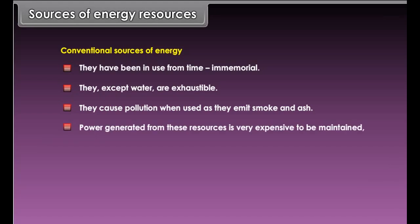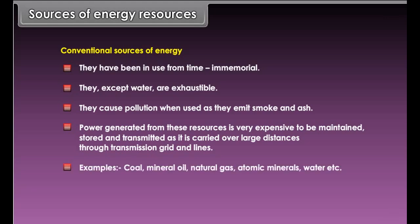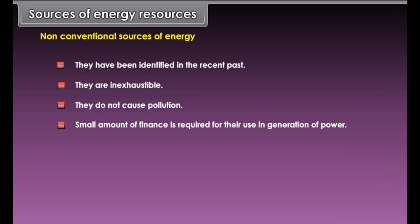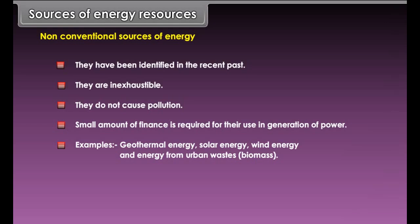Sources of energy resources. What is the difference between conventional and non-conventional sources of energy? Conventional sources of energy have been in use from time immemorial. They, except water, are exhaustible. They cause pollution when used as they emit smoke and ash. Power generated from these resources is very expensive to be maintained, stored and transmitted as it is carried over large distances through transmission grid and lines. Examples include coal, mineral oil, natural gas, atomic minerals, water, etc.